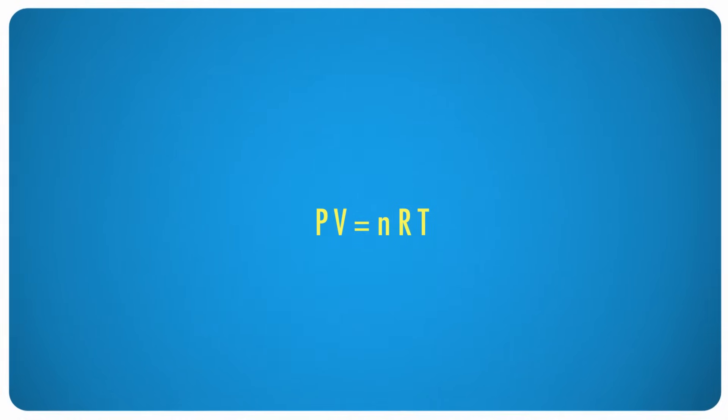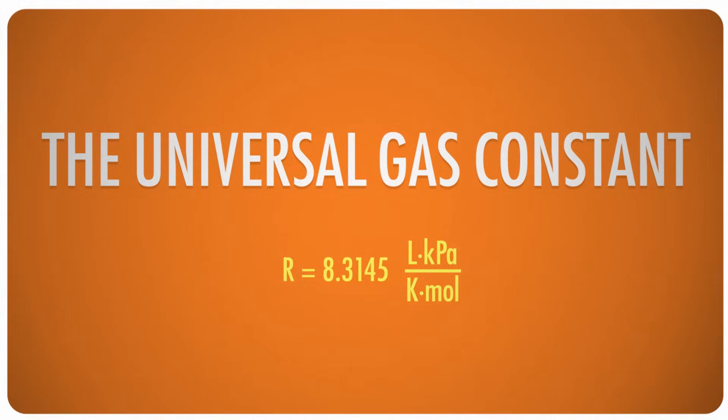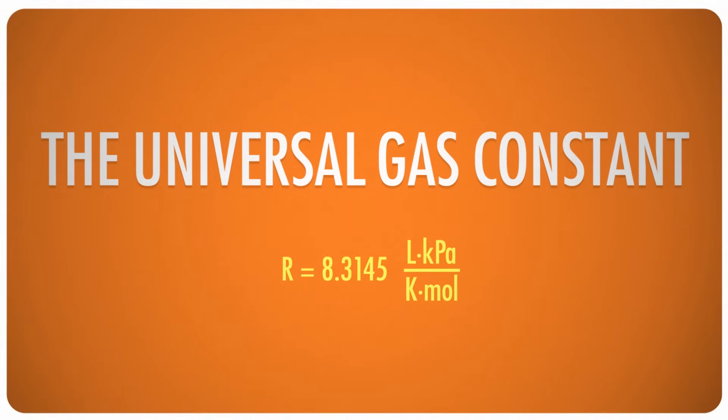With a little rearranging, we now have the ideal gas law that we know and love. R equals 8.3145 liter kilopascals per kelvin mole. But don't let the crazy unit scare you. It looks complicated, but it's really just a measurement label like meters or newtons, and it helps us out a lot in our calculations, which is mostly what we'll be doing today.